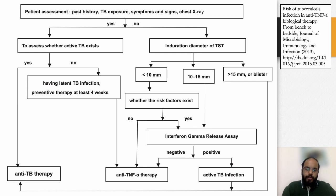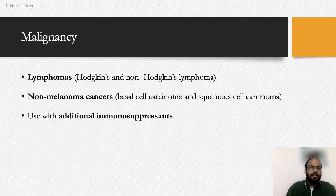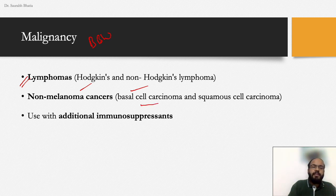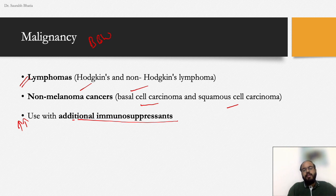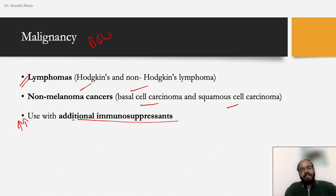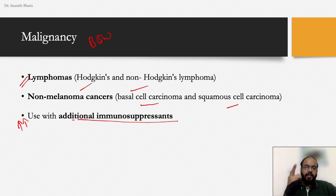Malignancy is the second black box warning for adalimumab. The most common malignancies are lymphomas, mainly Hodgkin's and non-Hodgkin's lymphoma. Non-melanoma skin cancers including BCC and SCC have also been reported. The risk significantly increases when adalimumab is used with additional immunosuppressants such as corticosteroids or methotrexate.